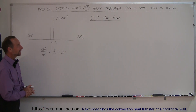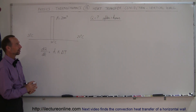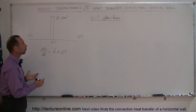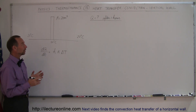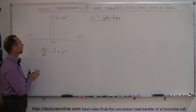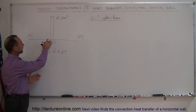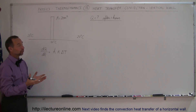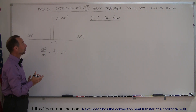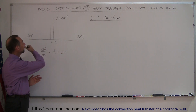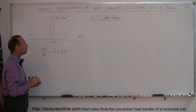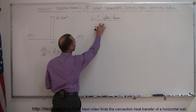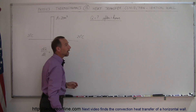Welcome to ElectronLine. Here we have a nice example of how to calculate heat loss through convection, and we're dealing with a vertical wall. The wall is kept at 100 degrees centigrade, the area is 20 square meters, it is 20 degrees on either side of the wall, and you're asked to find how much total heat is lost after one hour.